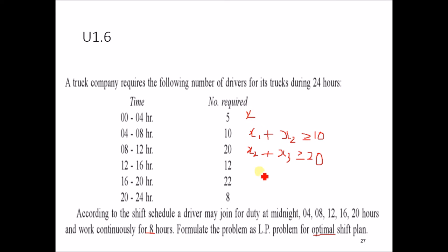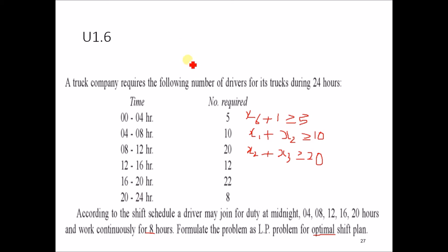The constraint for the 0 to 4 time slot is x6 plus x1 greater than or equal to 5. For 12 to 16 it is x3 plus x4 greater than or equal to 12, x4 plus x5 greater than or equal to 20, and x5 plus x6 greater than or equal to 8. The objective function is the summation of all variables, since the time slots are given as 4, 8, 12, 16, and 20 hours.